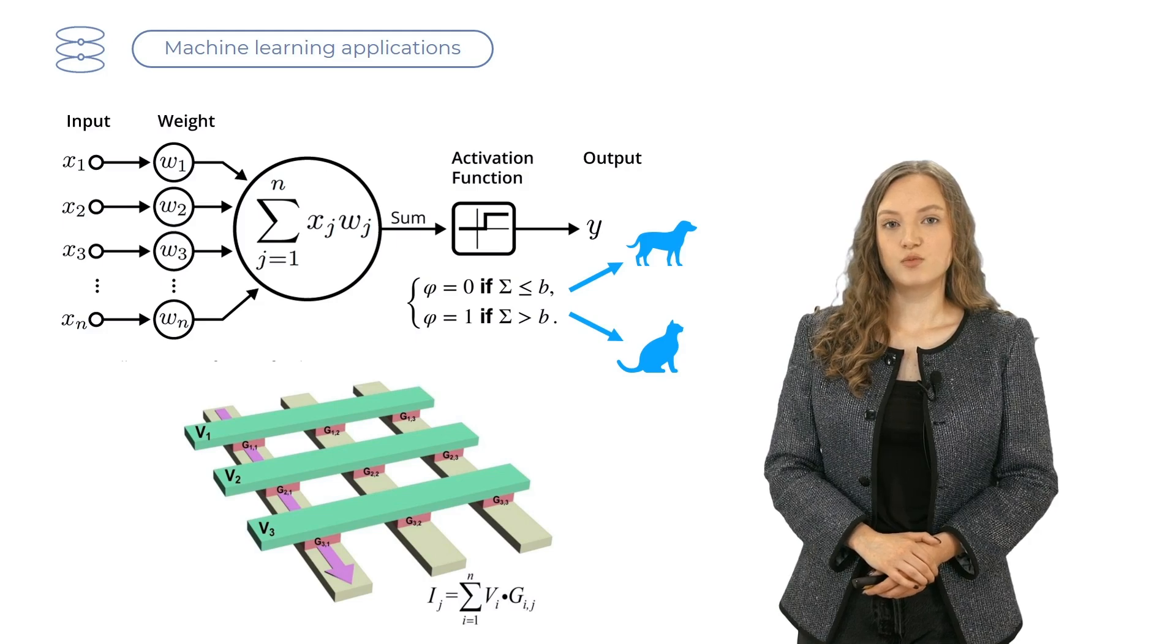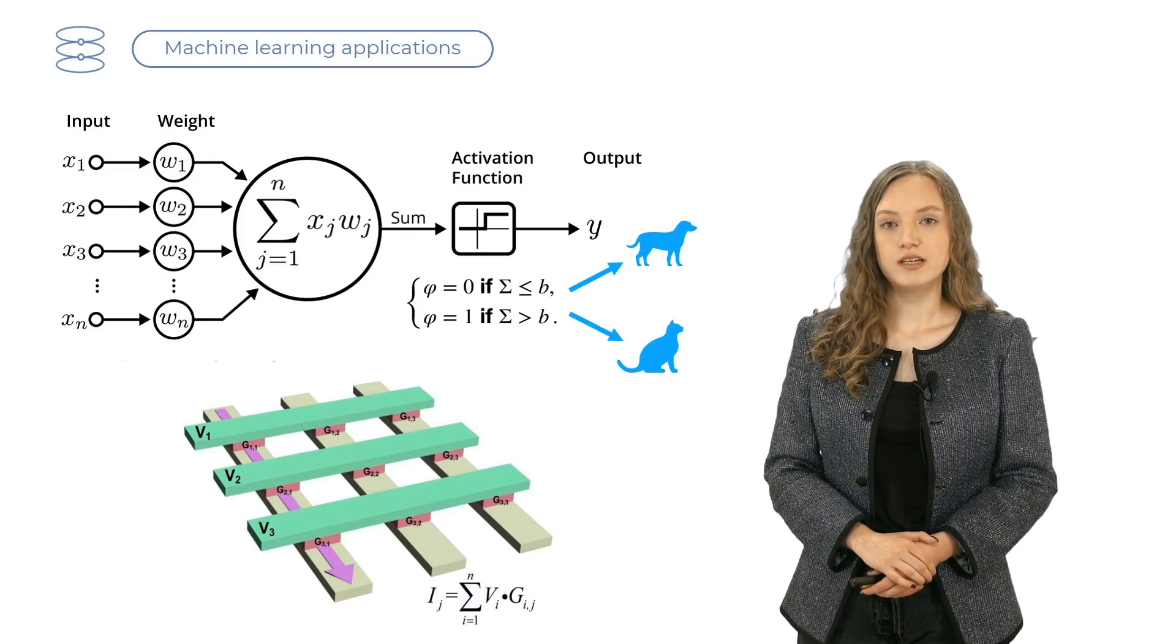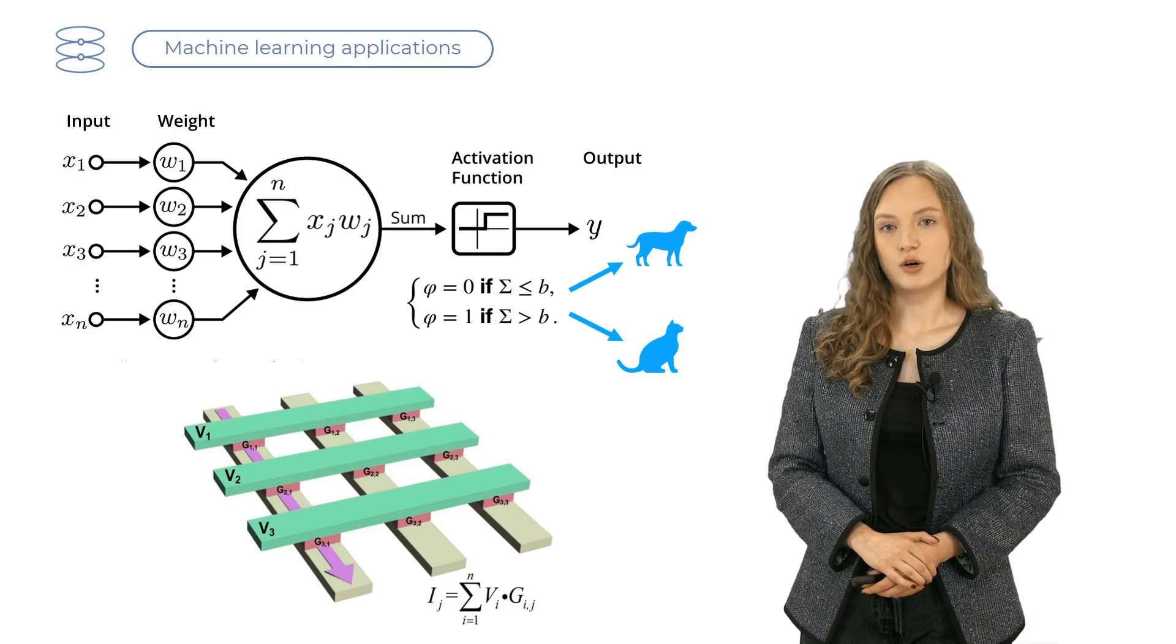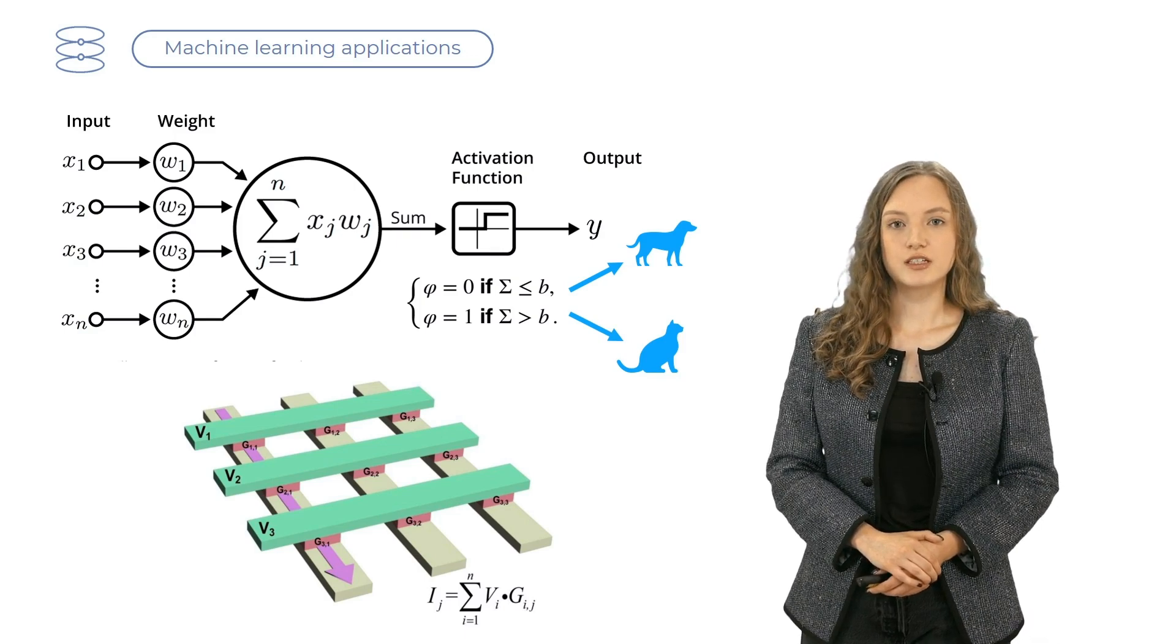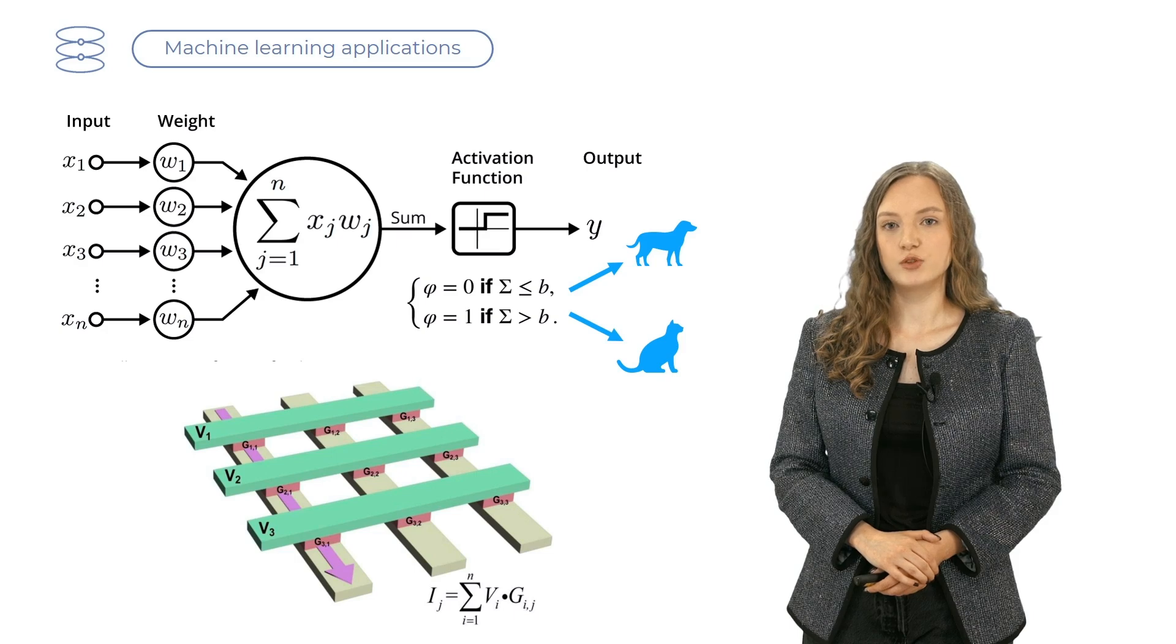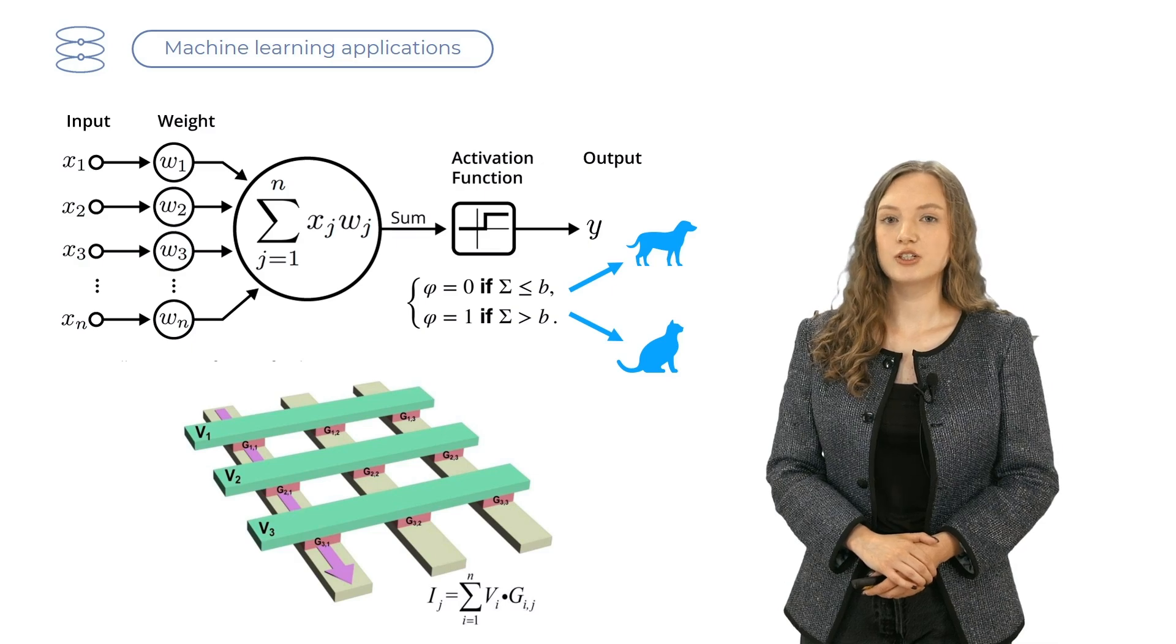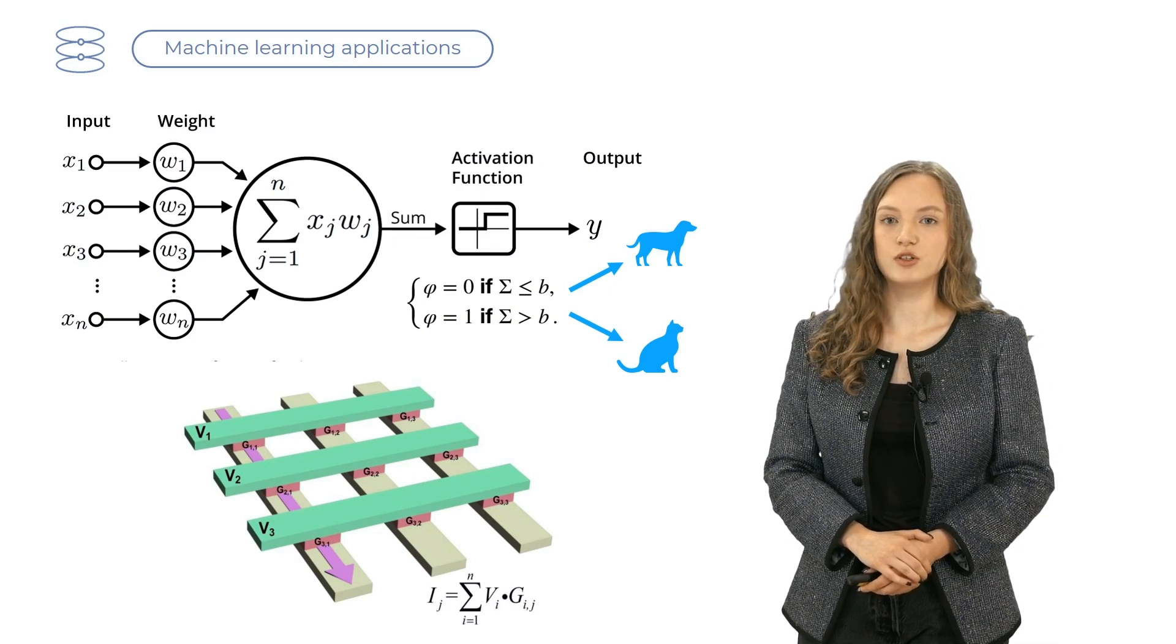Then we say that if the sum is more than some threshold b, then we see a cat. And if it's less or equal to b, then it's a dog. The machine learning task is to find the values of the weights, which would yield highest fidelity for recognition. And here memristors can actually play the role of artificial neurons, where the weights will be just their conductances.